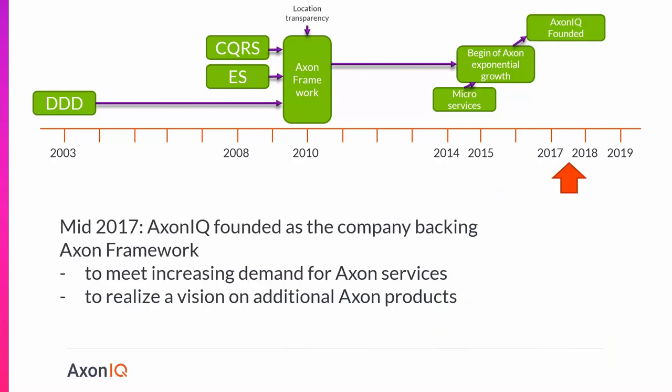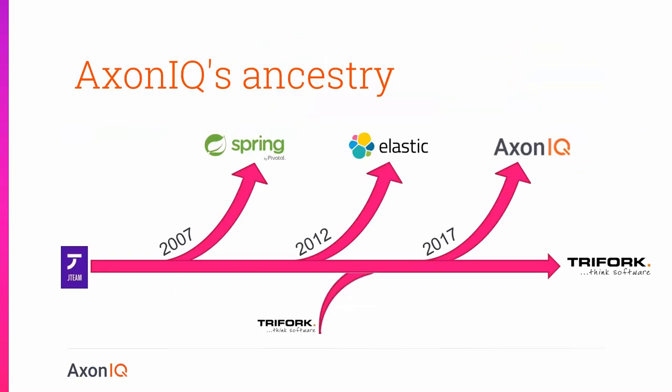Since Axon was growing so fast, there was an increasing demand for Axon services, and it made sense to start thinking about more advanced Axon products to complement the open source framework. That was the reason for founding Axonic. Axonic is the company now supporting Axon Framework, founded mid-2017 — about 19 months ago. Axonic split out of Trifork Amsterdam, where the founder was previously employed and where Axon Framework was managed. It became an independent company in 2017.